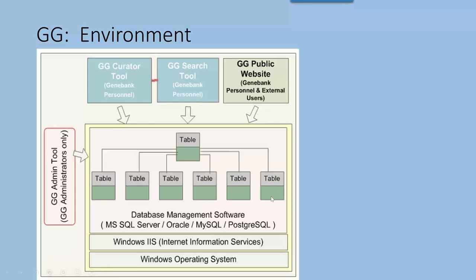The server has the database, the website, and the middle tier. The admin tool, shown on the left, is typically used by one or two people at most — in the US we have a large system and only two people actually use the administrator tool. At the top of the drawing are the user applications.